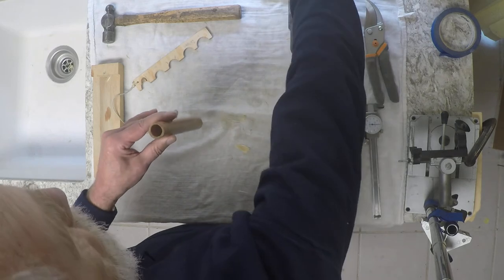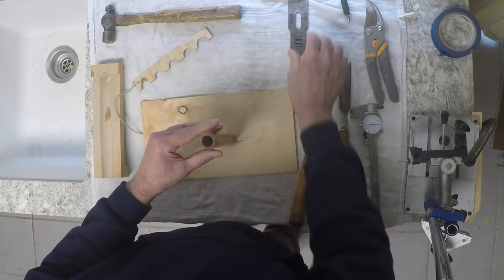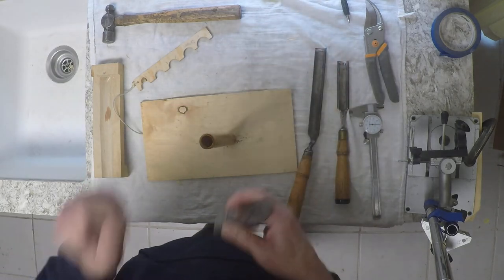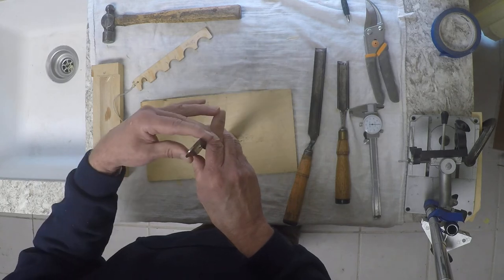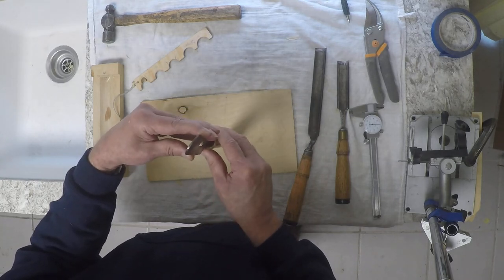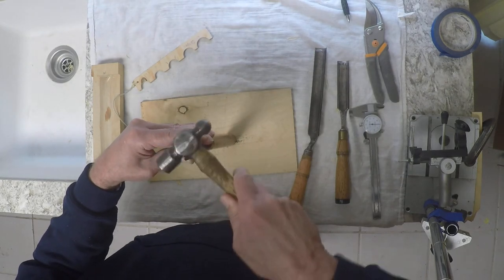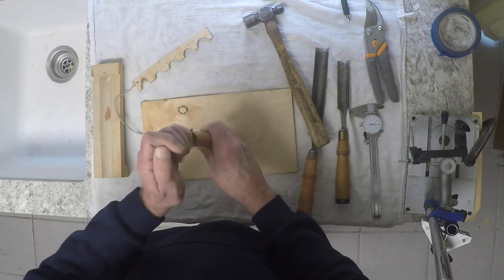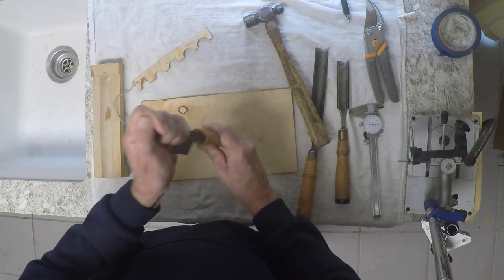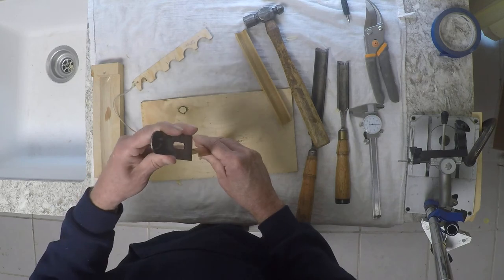I have a piece of cloth there so in case the plane goes too far it does not damage my countertop. And I split this in as best I can. I'm using the side of the hammer so I don't damage the hammer. Okay, so I've split that and then I split each one of these in half as well.